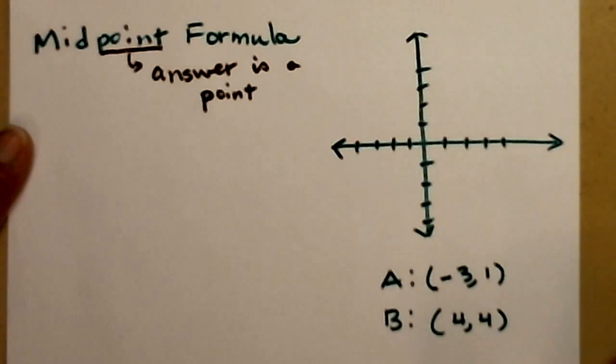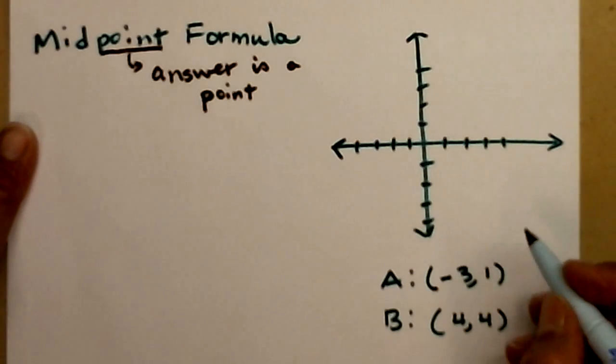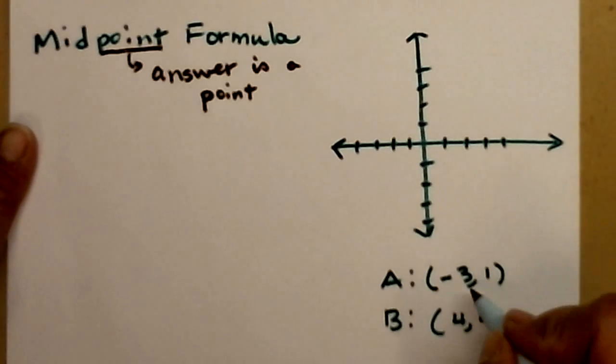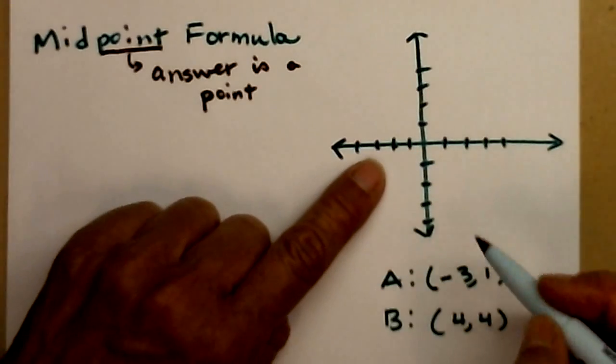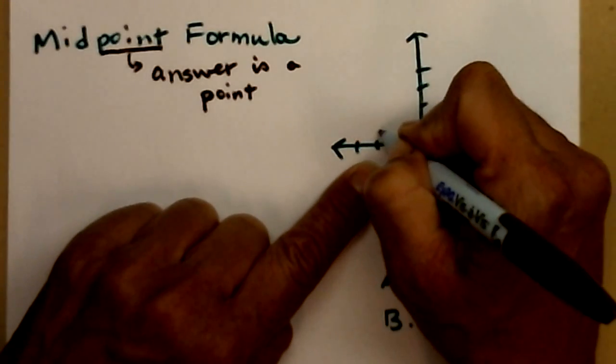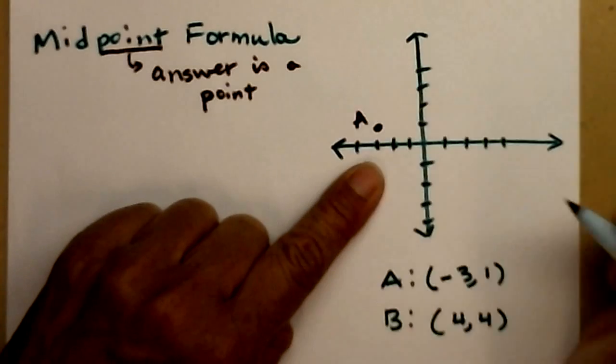So here's an example. I have two points, a and b. So let's go ahead and plot them both. So a is negative 3, 1. Remember, x comes first, then y. So we're going to go negative 3 in the x direction. 1, 2, 3. That's left. Up 1. And we'll find our point a.